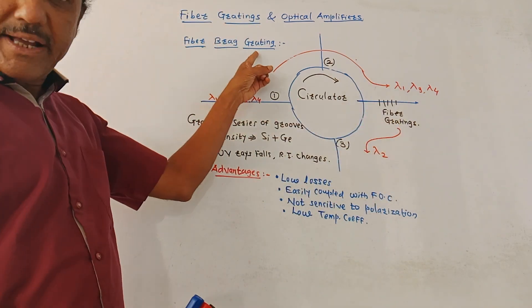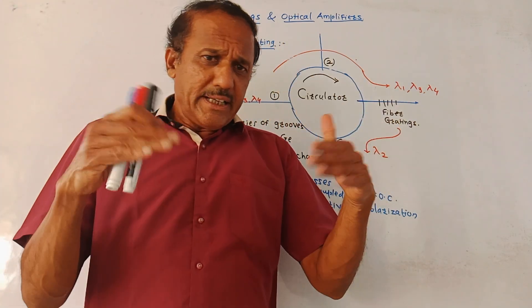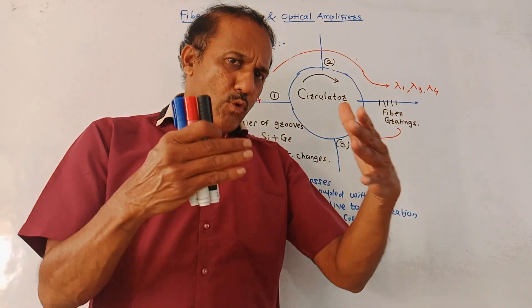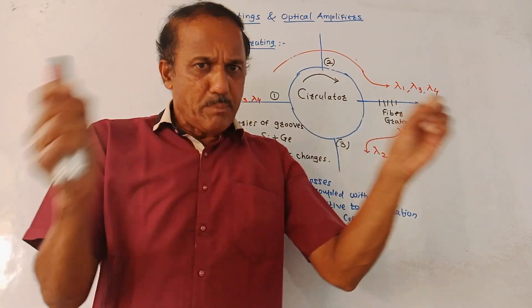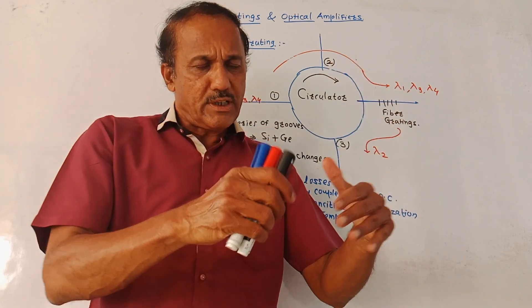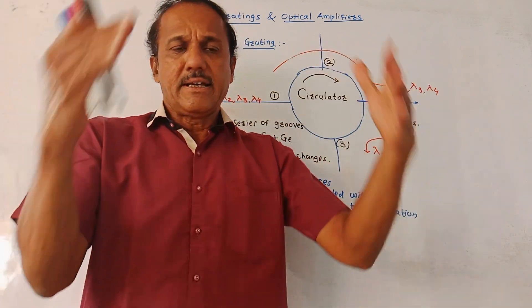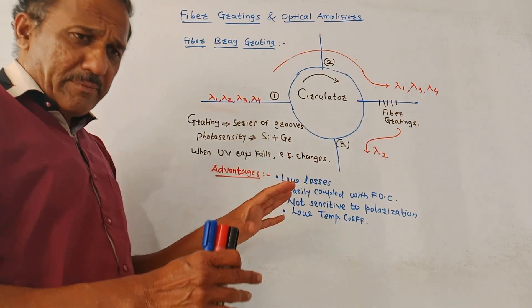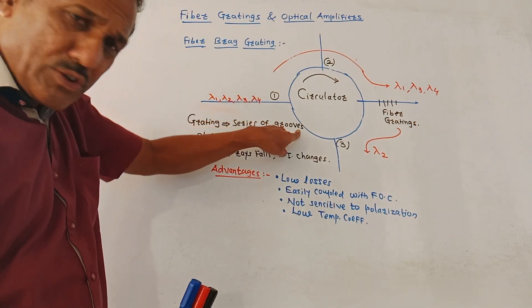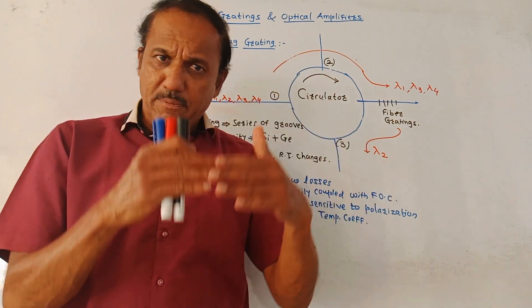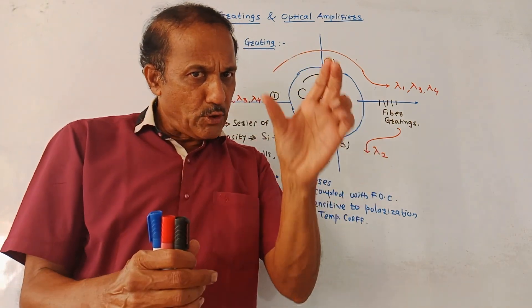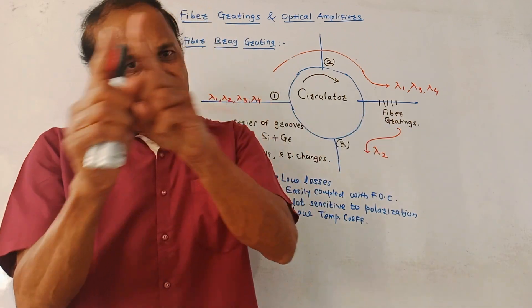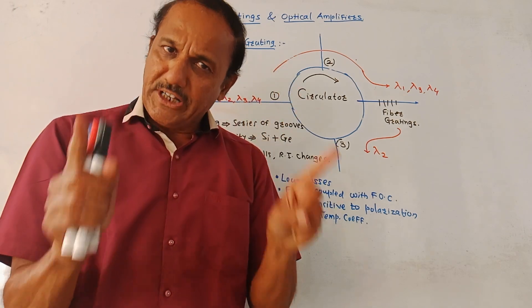First we will discuss fiber Bragg grating. Basically, a grating is a device which, in simple terms, draws one particular wavelength and allows the transmission of remaining wavelengths. Grating means a series of grooves are formed inside the fiber optic cable in such a way that a particular wavelength is reflected while the remaining wavelengths are transmitted in the forward direction.